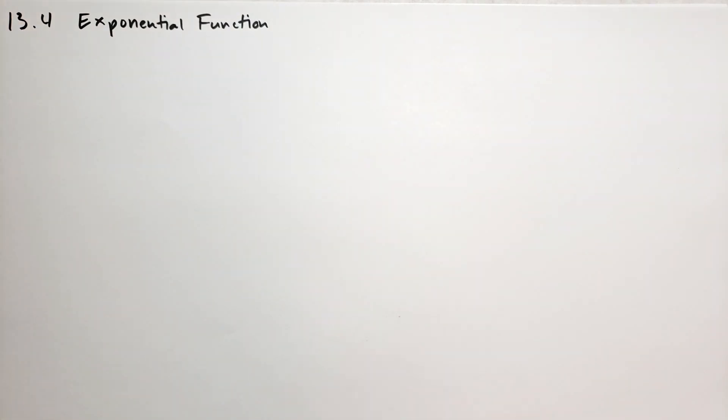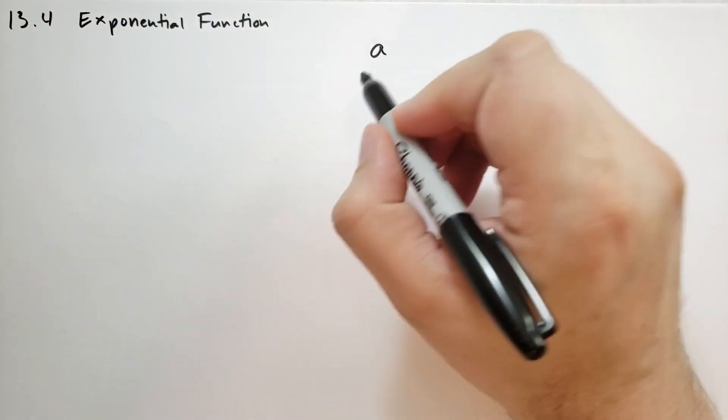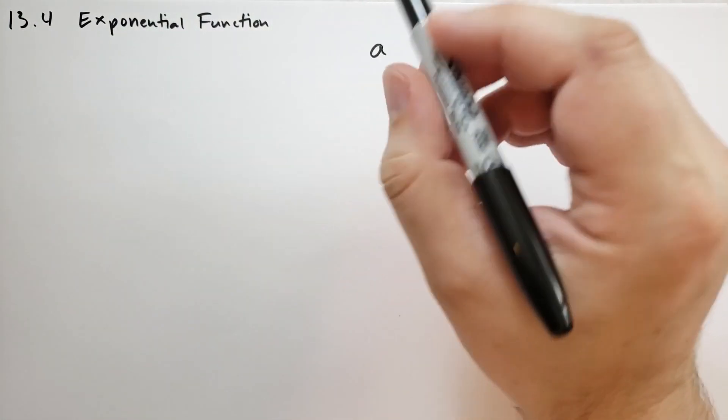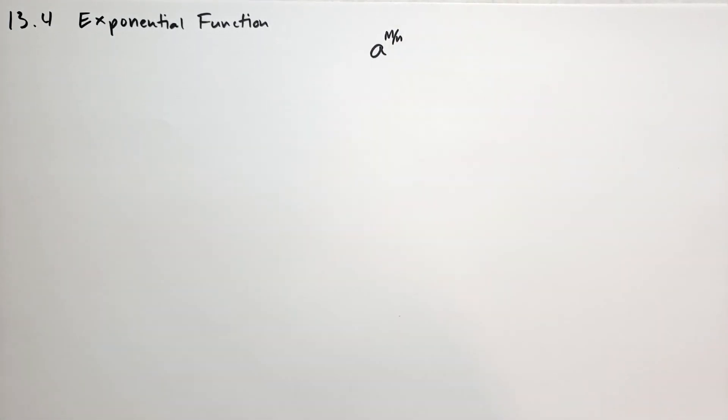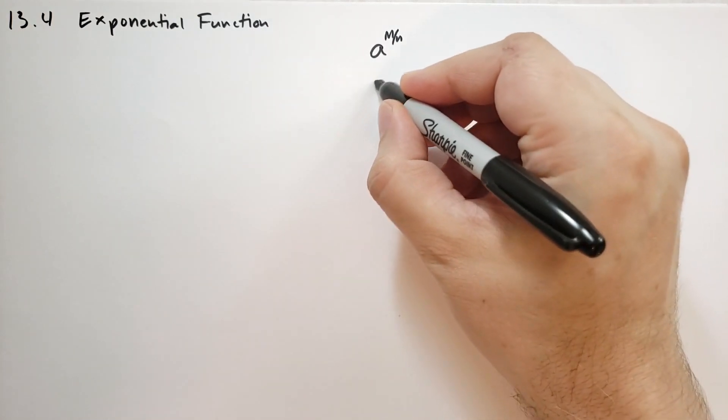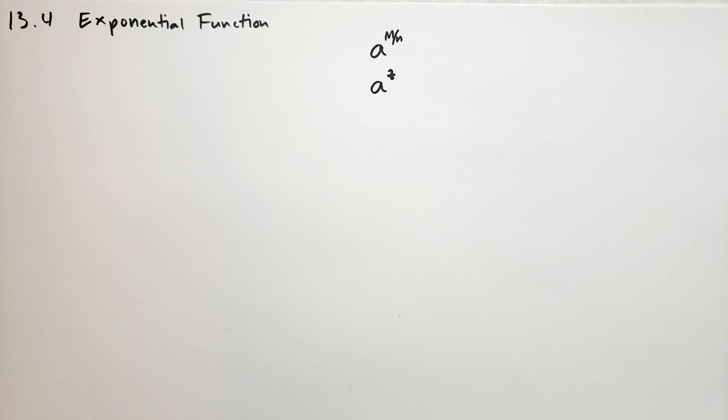We have already discussed what happens when you take some number, it could be a real number, rational, irrational, doesn't matter, and we raise that to the power of m over n where m and n are integers. So we know how to take the exponent of rationals. The problem is that we haven't really explained what happens when we take a to some real number that could be irrational. Today we're going to go down that road.